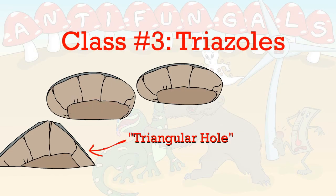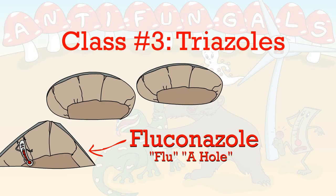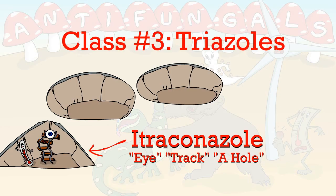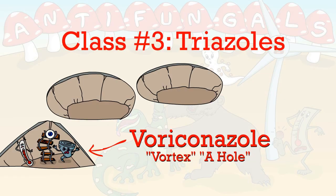Another class are the triazoles, represented by the triangular hole. The thermometer with the flu is fluconazole, the train track is itraconazole, and the vortex is voriconazole.